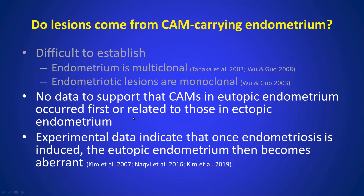There's actually no data to support that CAMs in eutopic endometrium occurred first, or that they're related to lesions in eutopic endometrium. In fact, experimental data indicate otherwise: for perfectly normal eutopic endometrium in rats, mice, or baboons, once you induce endometriosis, sooner or later you will find molecular aberrations in the eutopic endometrium. This actually suggests that once endometriosis is established, it will somehow impact the eutopic endometrium.